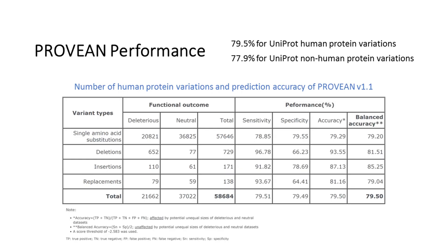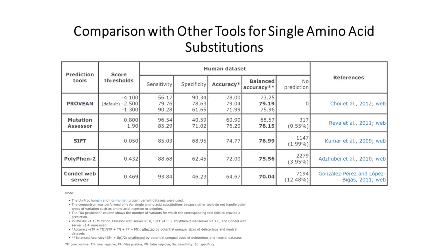A summary of specificity and sensitivity obtained using different score cutoffs is shown. The overall accuracy for binary classification is about 79.5% for UniProt human protein variations and 77.9% for UniProt non-human protein variations. The performance of PRUVIAN was also compared with other prediction tools such as Mutation Assessor, SIFT, PolyPhen-2, and CONDEL using default score thresholds, and overall the performance of PRUVIAN is comparable to other tools.